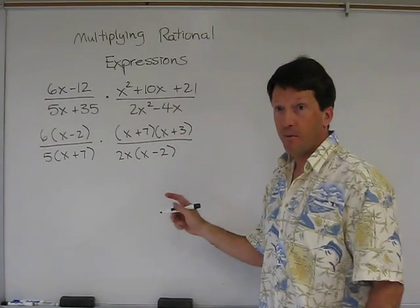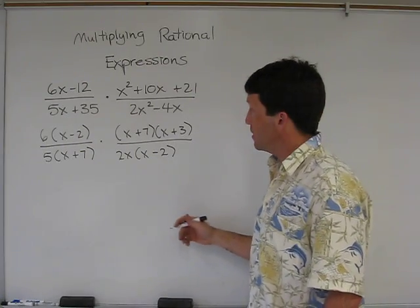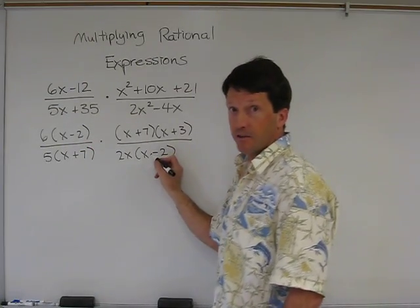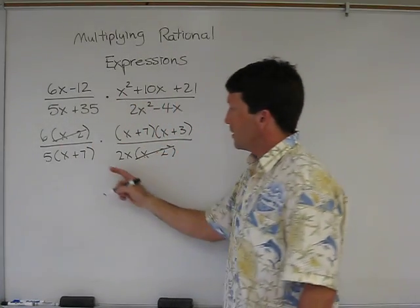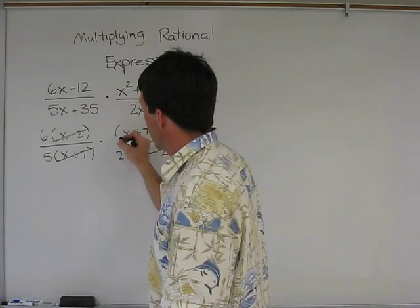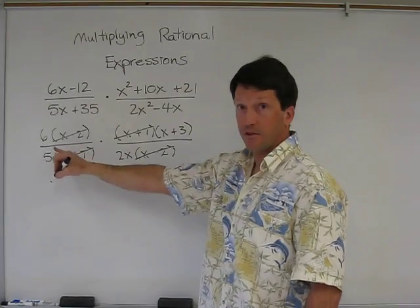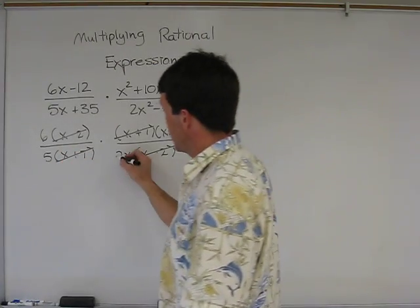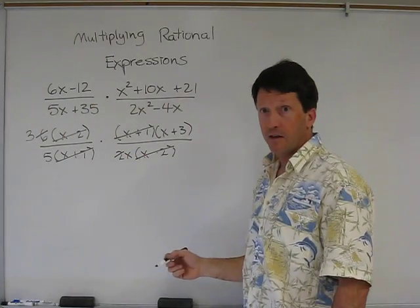So here's what it looks like when we have all the factors broken down. Now I'll see what I can cross-cancel. Here I can cross-cancel x minus 2. Here I can cross-cancel x plus 7. I can cross-cancel 2 into 6 three times. And that's all I can do.